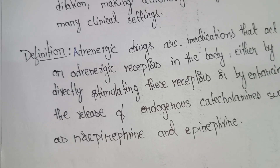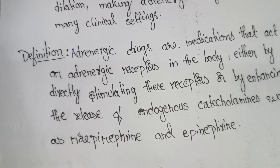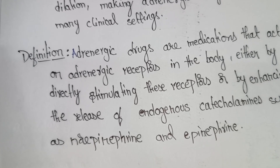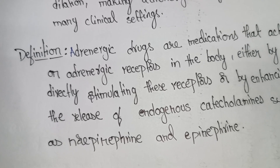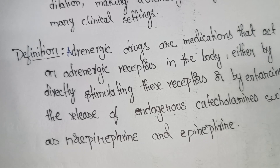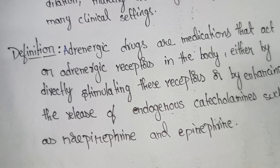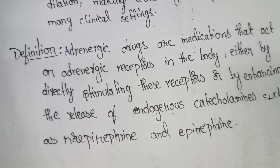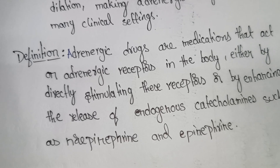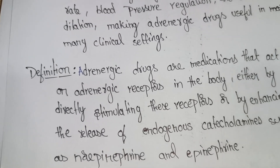After the introduction, we need to write the definition. The definition is: 'Adrenergic drugs are medications that act on adrenergic receptors in the body, either by directly stimulating these receptors or by enhancing the release of endogenous catecholamines such as epinephrine or norepinephrine.' This is the definition of adrenergic drugs.